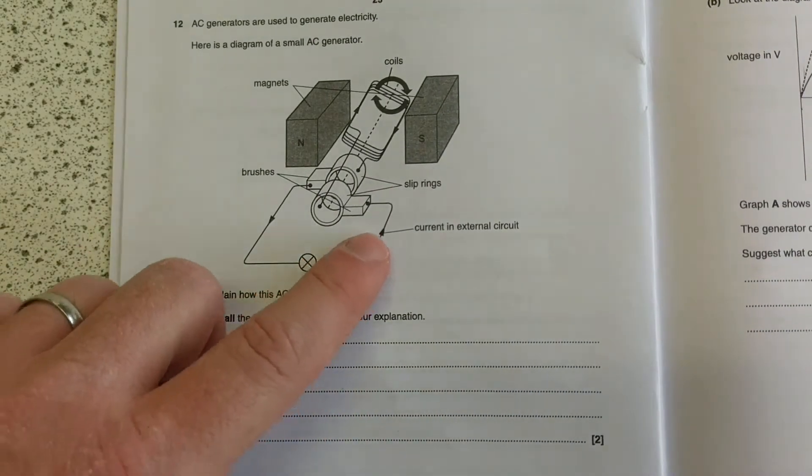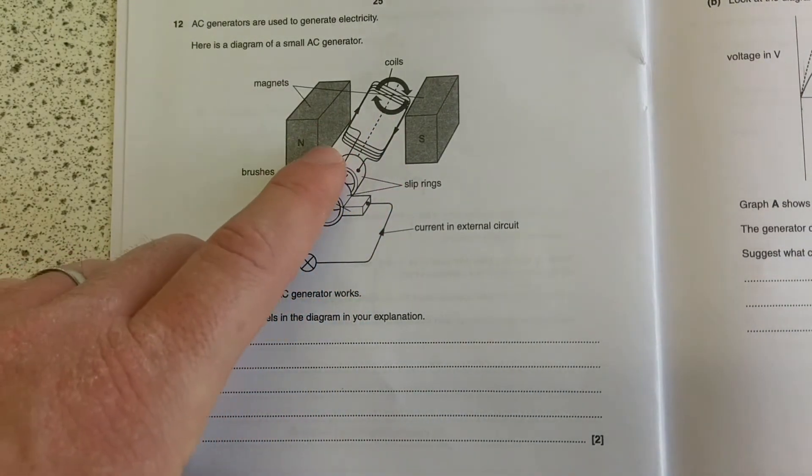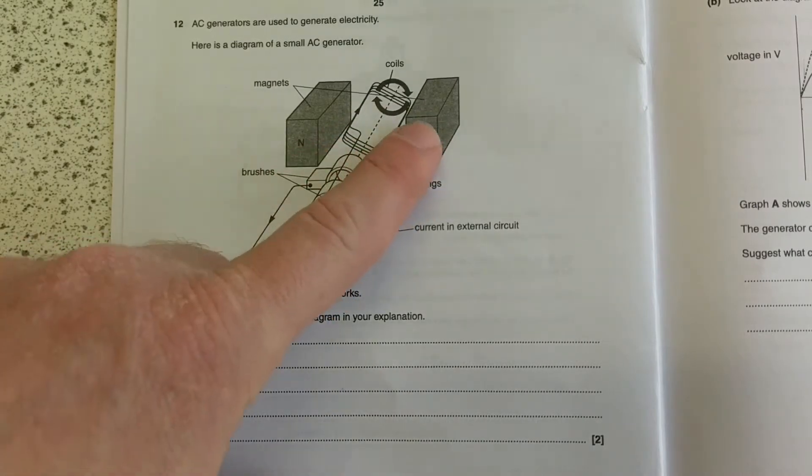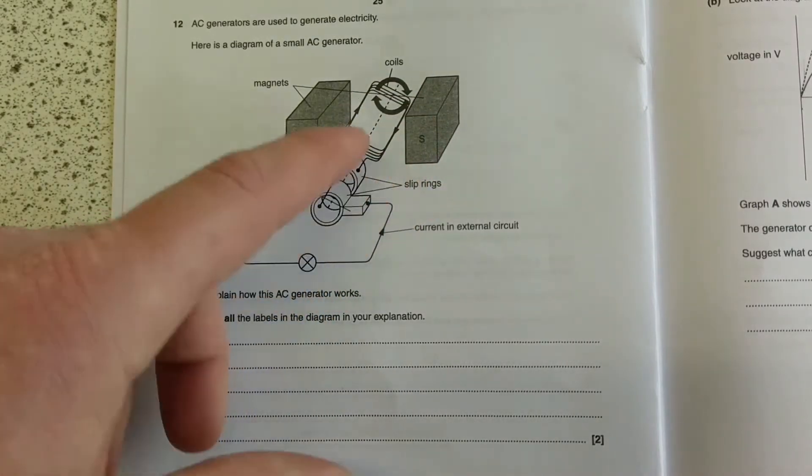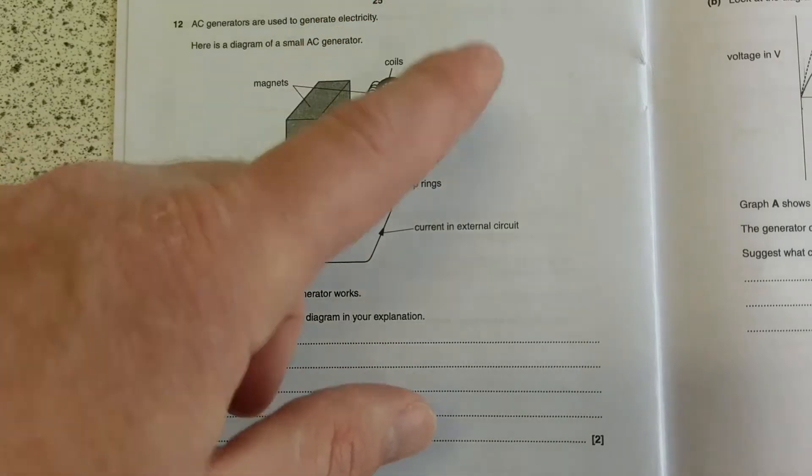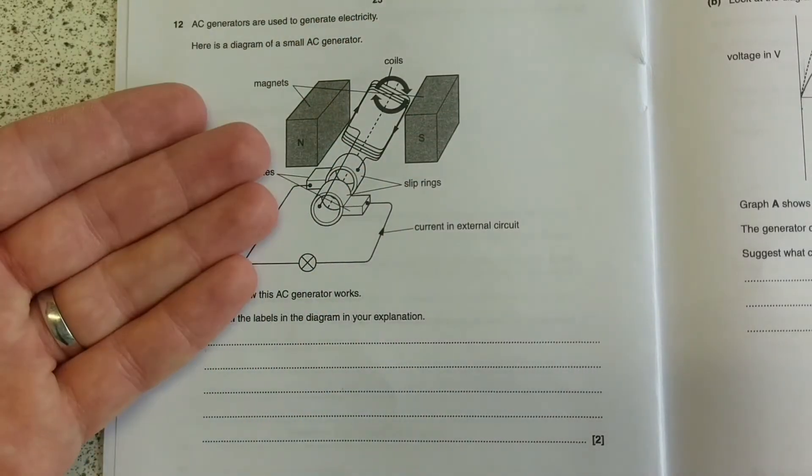So they've talked about you put a current in this coil, and that causes an interaction between the magnetic field and the current in the coil, causing a force on the motor, causing it to rotate. But it's not. It's a generator.